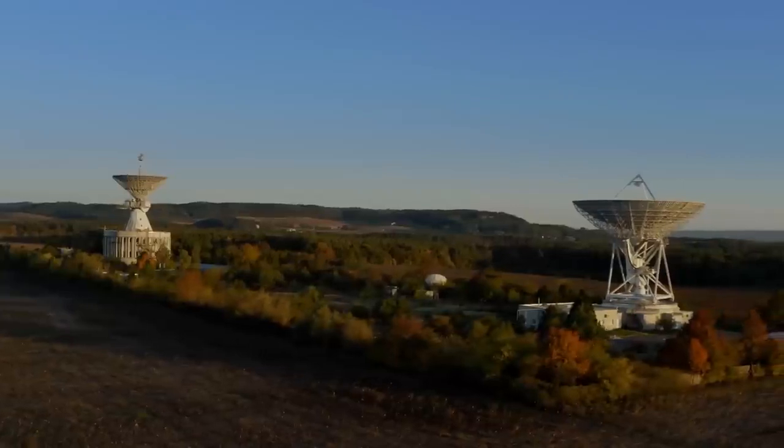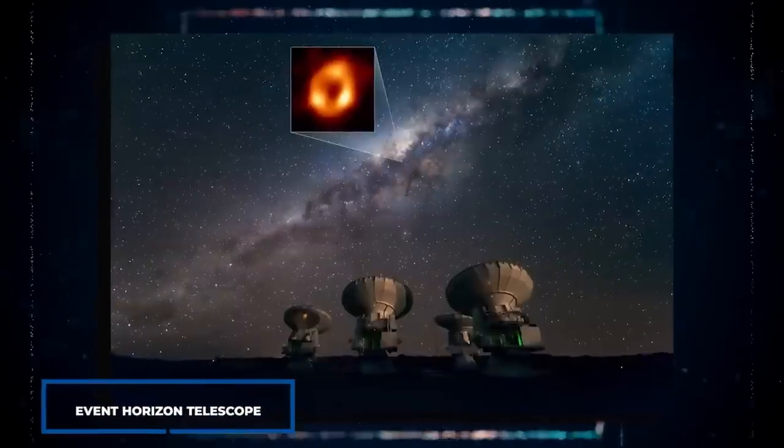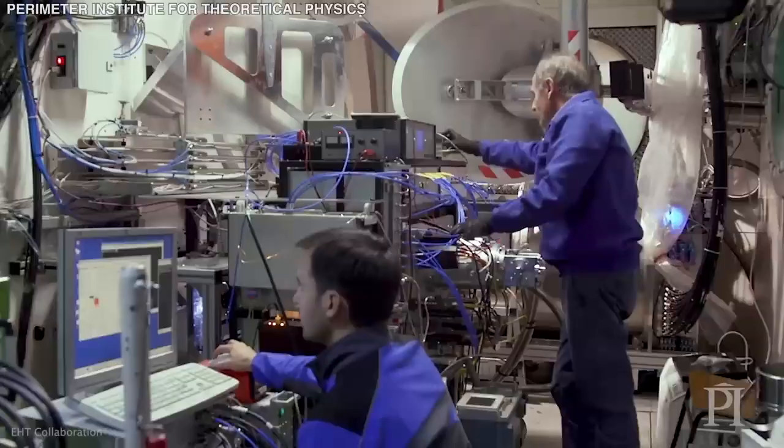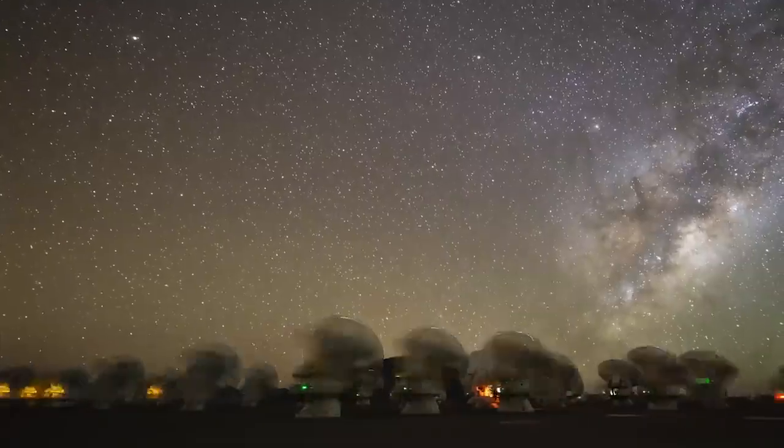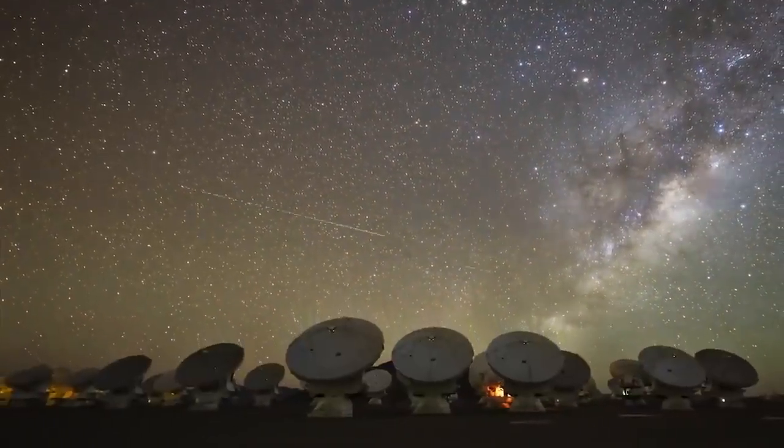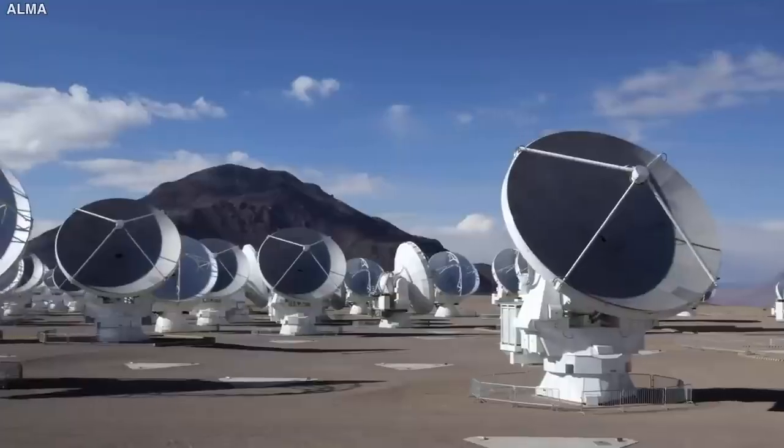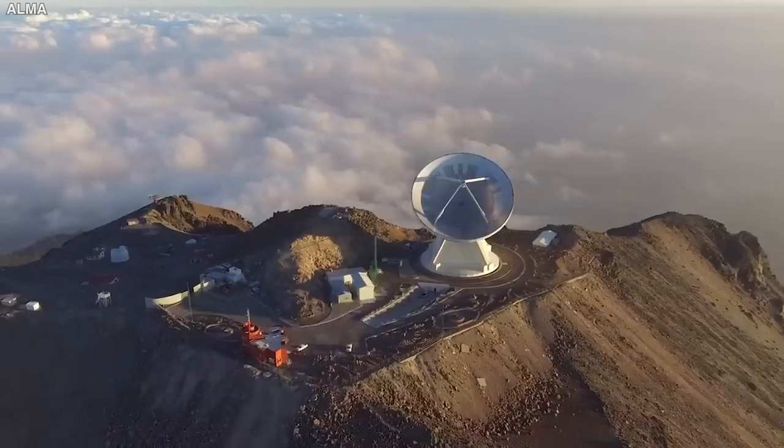This global network of radio telescopes was known as the Event Horizon Telescope, and the procedure of capturing a single image of Sagittarius A was quite spectacular. This network of radio telescopes worked as a single unit, resulting in the largest planet-sized telescope ever operated.